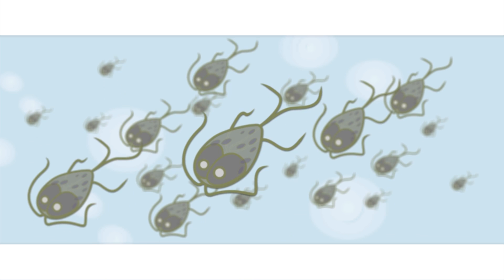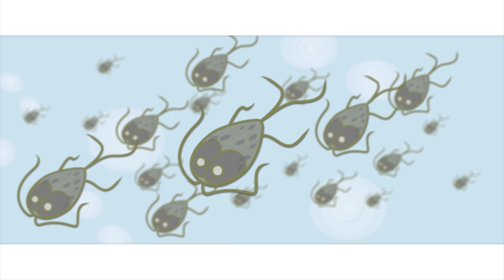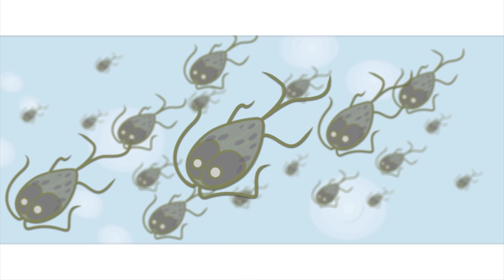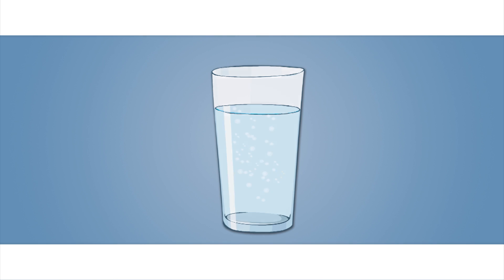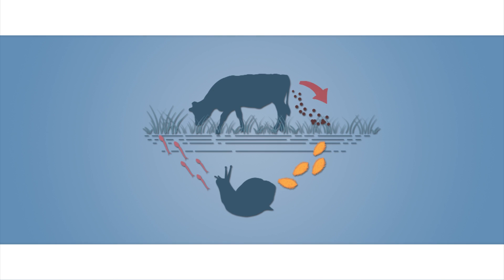Some pathogenic agents are immediately infectious when they are shed. Giardia, a protozoan that can cause diarrhea in numerous species, is an example. In contrast, some organisms require time, either within the environment or within another host or vector, to develop into the infectious stage. Many aspects of the pathogen's life cycle influence how easily it can be controlled and the points at which it can be destroyed.